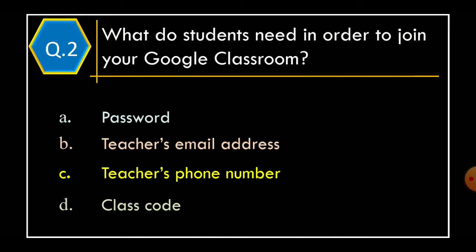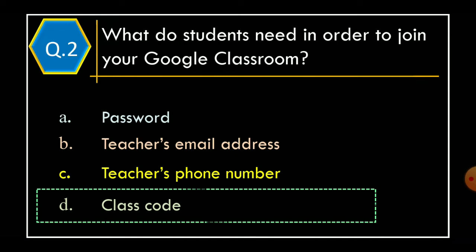Question 2: What do students need in order to join your Google Classroom? Option A: Password, Option B: Teacher's Email Address, Option C: Teacher's Phone Number, Option D: Class Code. And correct option is Option D: Class Code.